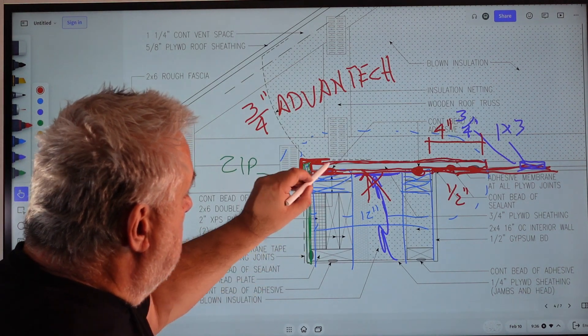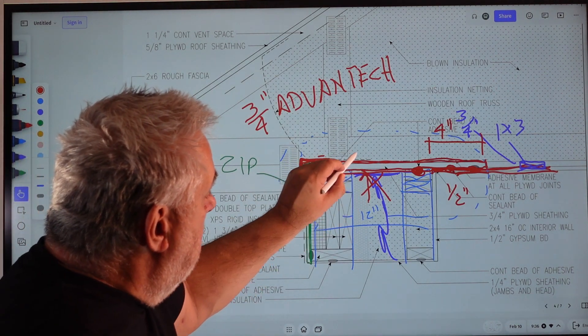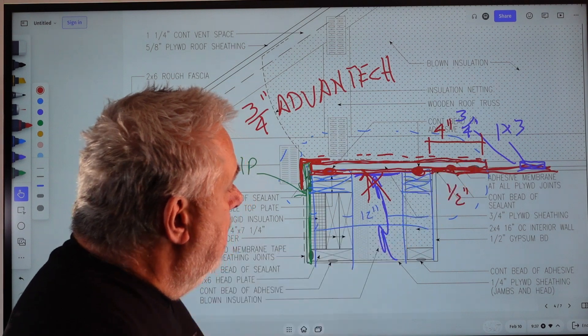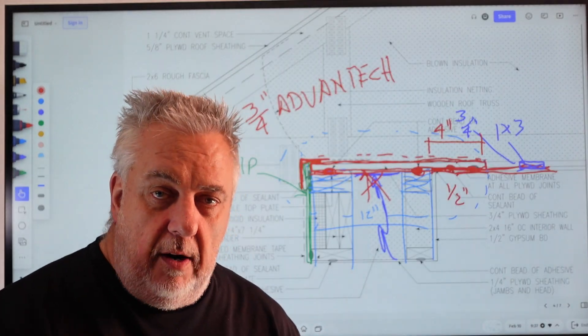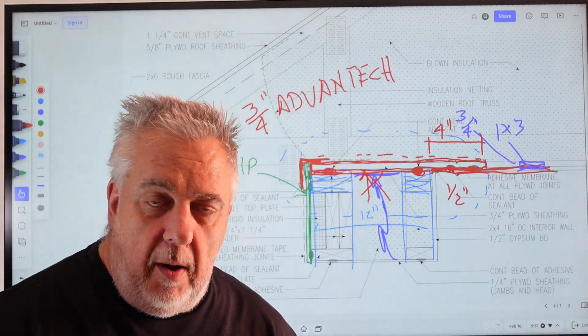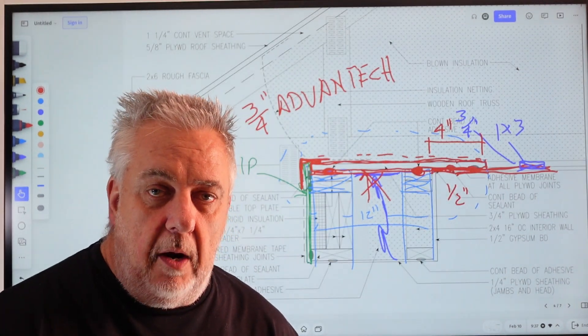And if I extend this four inches here, then what I've got now is a flange that I can bring my drywall over and connect to that three quarter inch. I can also come out here and I can tape that joint.